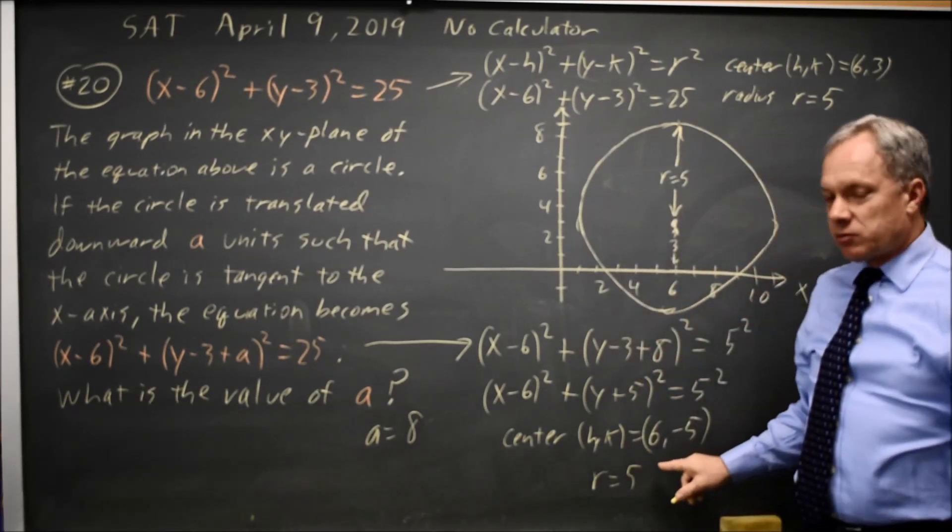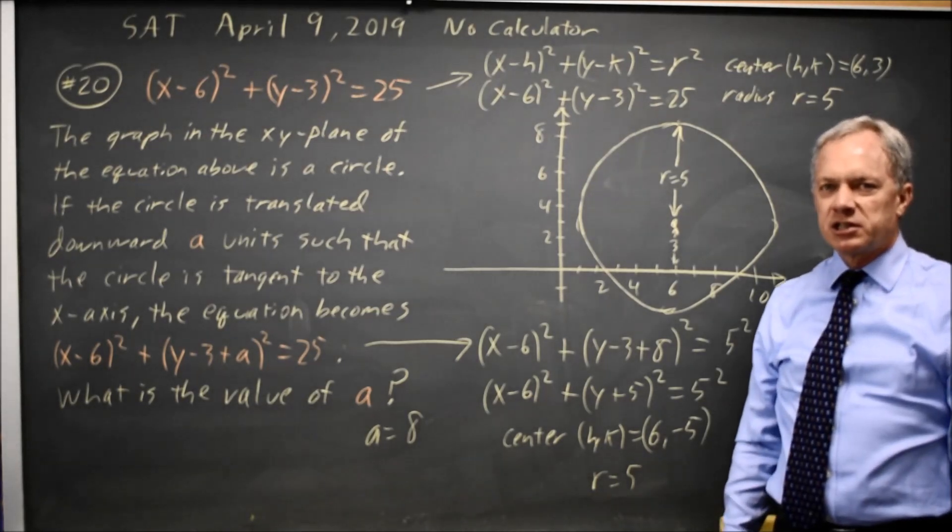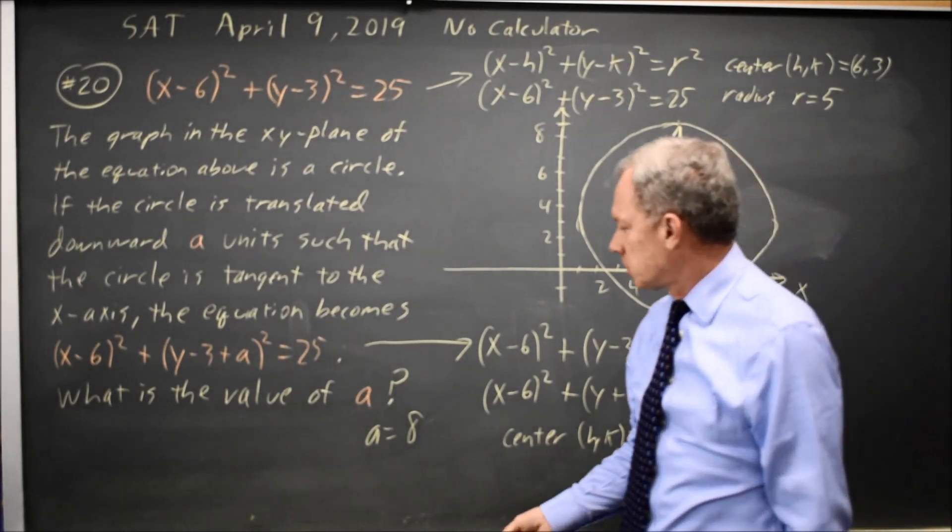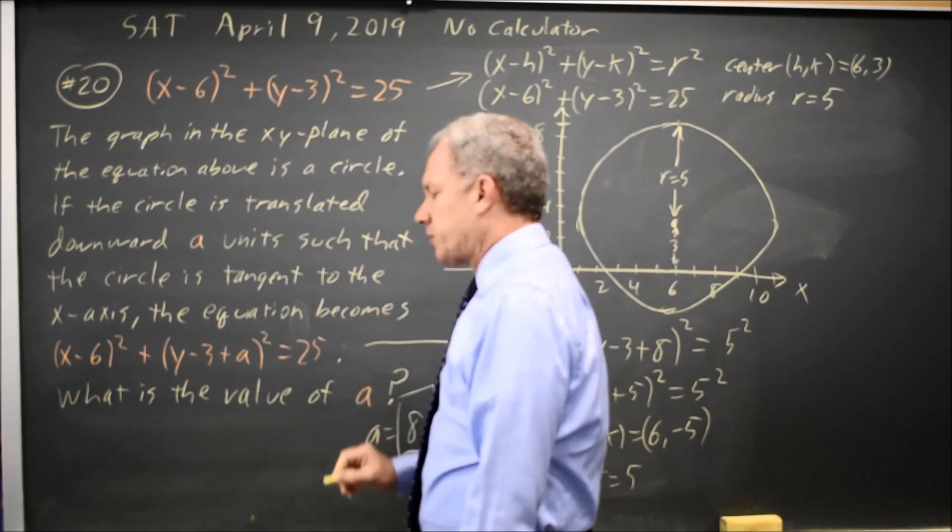If the center is negative 5 and the radius is 5, we are tangent to the x-axis. So this did in fact work. The correct answer would be 8.